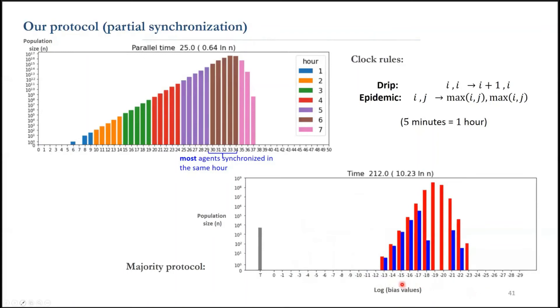As you observed, the benefit of partial synchrony is its time optimality. Still, we lost perfect cancelling, since now we have more than one bias value among the population at any time. As a result, the ending configuration looks like this.